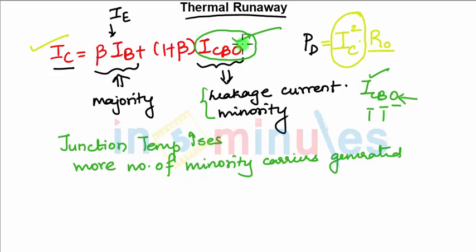If ICBO is increasing, your IC will increase (1+β) times the ICBO. The practical value of beta is around, for example, if you take it as 300, so if your ICBO changes by a small value, your IC changes by a larger value because we are multiplying ICBO with 301.